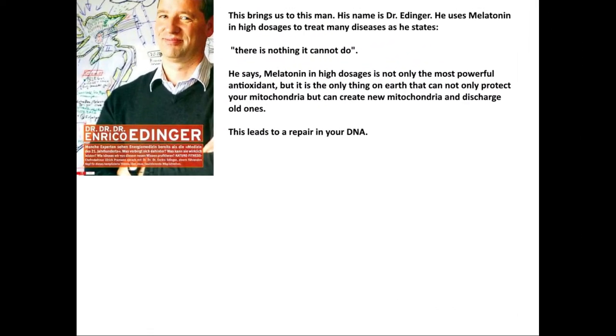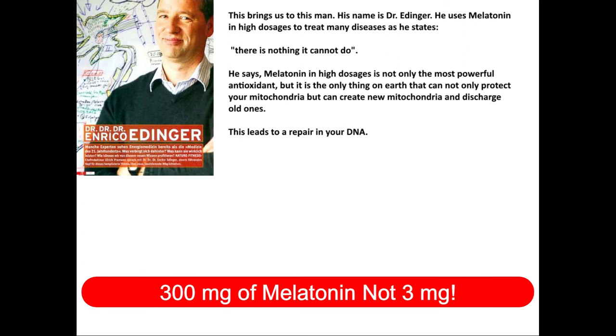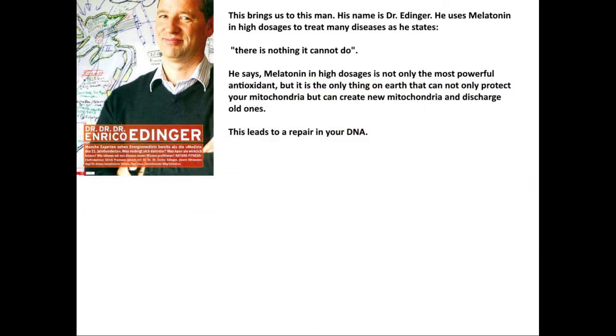This brings us to Dr. Ettinger. He uses melatonin in high dosages to treat many diseases. As he states, there is nothing it cannot do. Melatonin in high dosages is not only the most powerful antioxidant, but it is the only thing on earth that can not only protect your mitochondria but can create new mitochondria and discharge old ones, leading to a repair in your DNA. In the science of aging, it is very important that you can grow many new mitochondria — the powerhouses of your cells — which have the power to repair your DNA. At the same time, old mitochondria that stick around must be turned off, as from an energetic point of view they are catastrophic. The only system that can turn off those old mitochondria is melatonin. That is where the magic of melatonin starts to kick in.